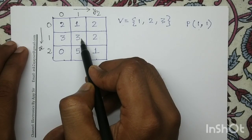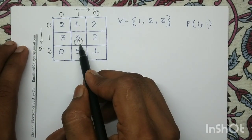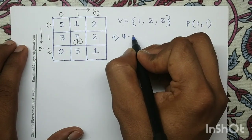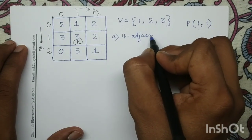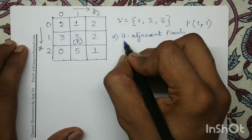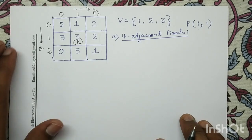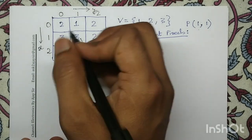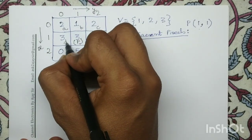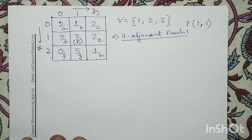For pixel P having coordinate (1,1), we have to identify its four-adjacent and M-adjacent pixels. For simplicity, let us name the surrounding pixels: this pixel is A, this is B, this is C, this is D, this is E, this is F, this is G, and this is H.